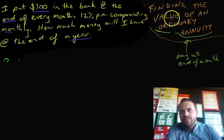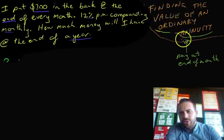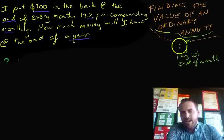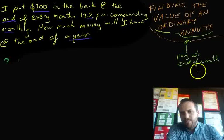Okay, so in this video we're finding the value of an ordinary annuity. Now, first of all, an ordinary annuity means that the payment is being made at the end of the month.